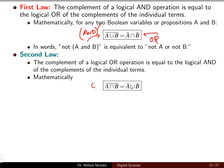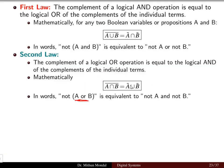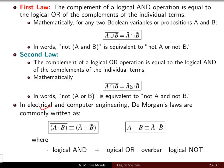In the second De Morgan's law, the complement of (A OR B) equals (NOT A) AND (NOT B). In electrical and computer engineering these laws are commonly written as: (A dot B) bar equals A bar plus B bar, and (A plus B) bar equals A bar dot B bar. These two laws are used whenever a Boolean algebra function is complicated and needs to be simplified and analyzed in digital circuits.